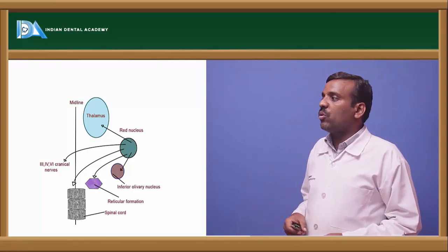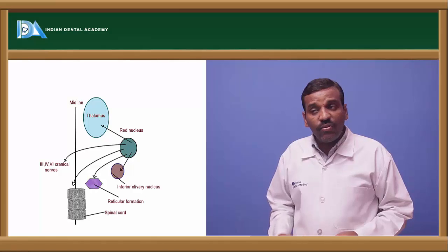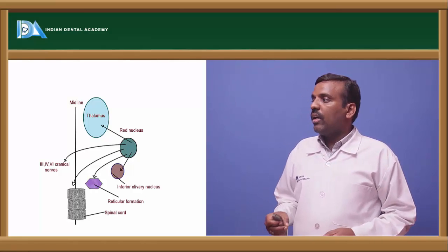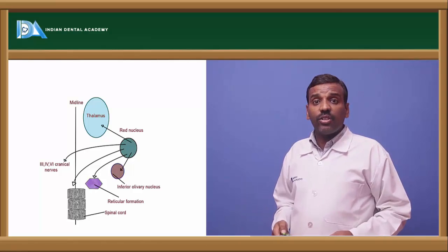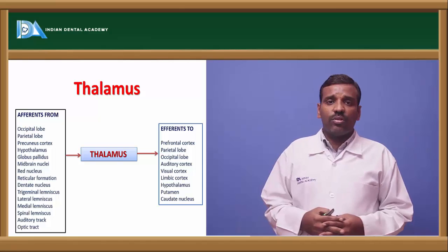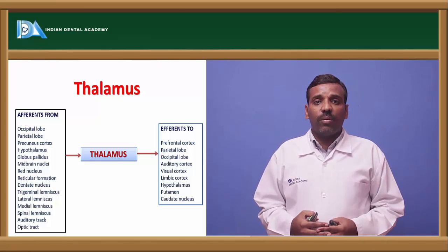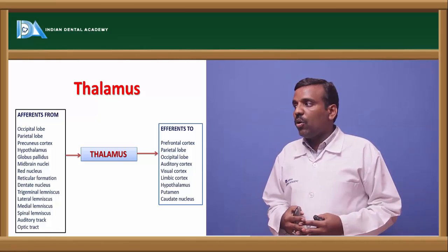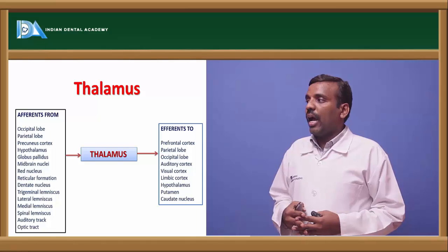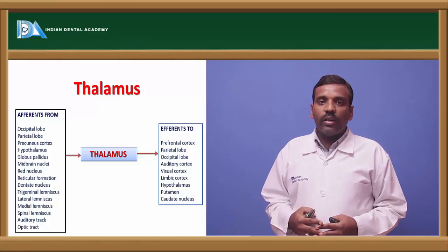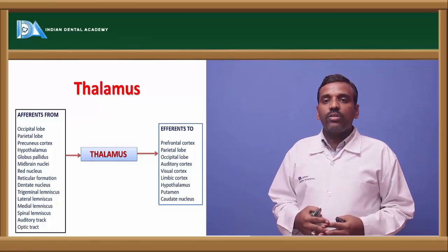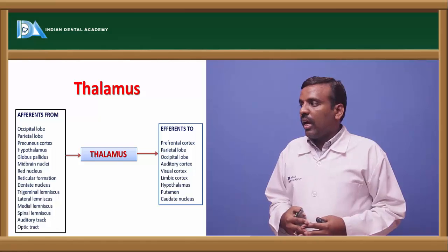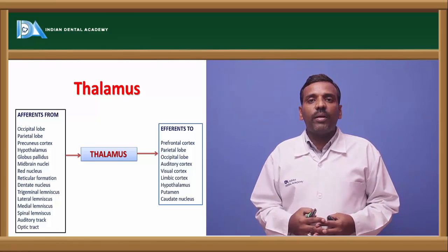Efferent connections from the red nucleus send information to the thalamus, third, fourth, and sixth cranial nerve fibers, the spinal cord, inferior olivary nucleus, and reticular formation. Regarding thalamus connections — afferent fibers come from the occipital lobe, parietal lobe, precuneus nucleus, hypothalamus, globus pallidus, midbrain, red nucleus, reticular formation, dentate nucleus, trigeminal lemniscus, lateral lemniscus, medial lemniscus, spinal lemniscus, auditory tract, and optic tract.